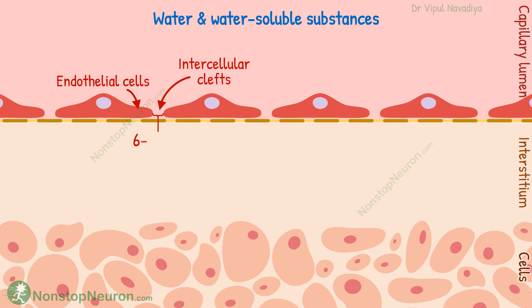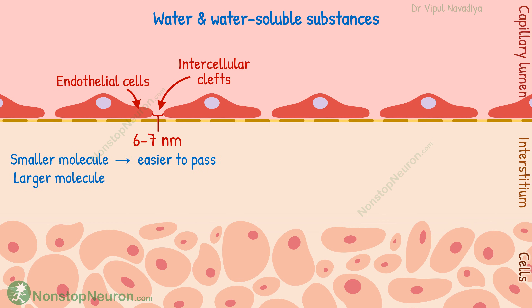Although the clefts take a very small percent of the total surface area of capillary, they are more than enough for rapid diffusion of substances. This is because of the high thermal velocity of molecules in the fluid. Or in simple words, the molecules themselves are moving so enthusiastically that even these small gaps are more than enough for them. Now, the size of this cleft is 6 to 7 nanometers. The smaller the molecule than this size, the easier it is to pass through, and the larger the size, the harder to pass.